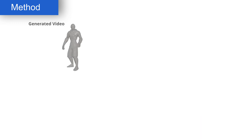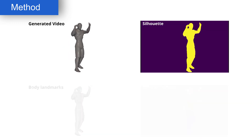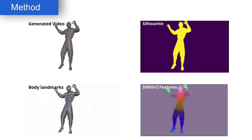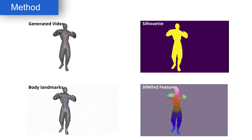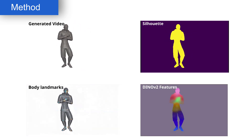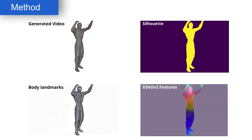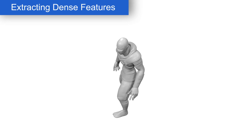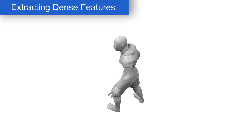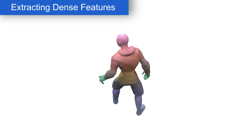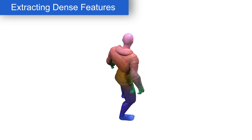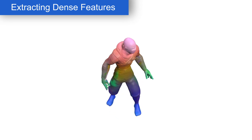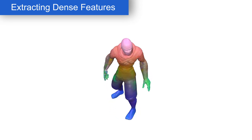From the generated video, we extract its silhouette, identify body landmarks, and compute dense per-pixel features with a pre-trained DINOv2 encoder. We analogously annotate the input mesh with dense features, rendering it from multiple views, extracting the features with the same encoder, and projecting them back onto the mesh.